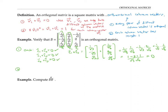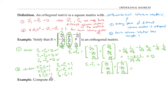So the column vectors are all orthogonal. Now let's check that they all have length one — equivalently, that the dot product of each column vector with itself equals one. For example, C1 dot C1 is one over root three times one over root three, plus negative one over root three times negative one over root three, plus one over root three times one over root three, which adds up to one third plus one third plus one third, which is indeed one. I'll let you verify that the other two columns also have length one.